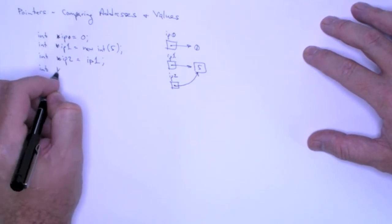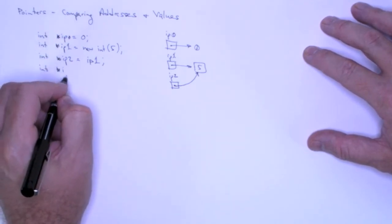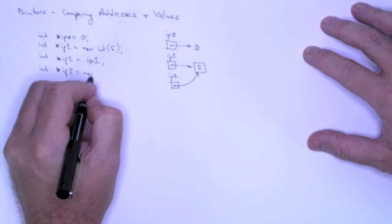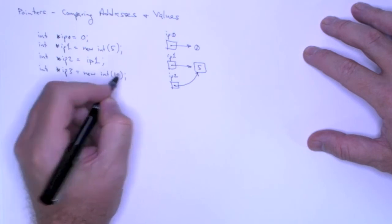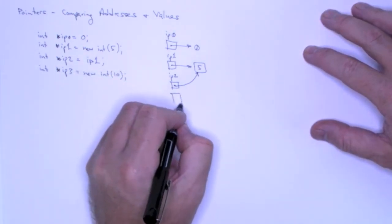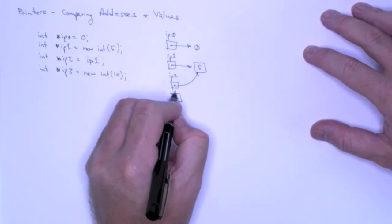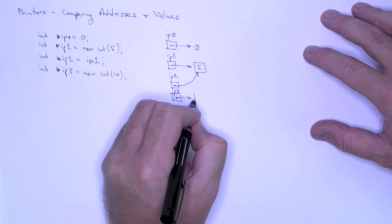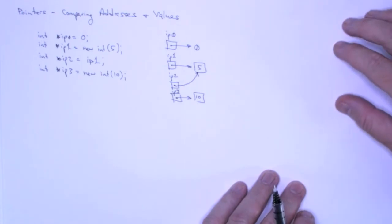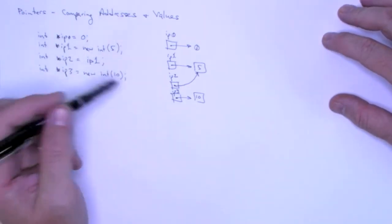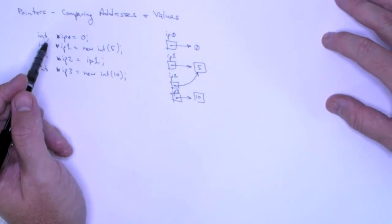And now let's declare IP3 and I'm going to create a new integer, 10 for it. So in terms of my diagram, I get something that looks like this.